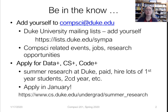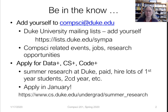First of all, be in the know if you want to know about computer science events that are happening. You need to add yourself to the compsci@duke.edu mailing list. This is a university-wide mailing list. We post messages there about CompSci jobs and events related to computer science. If you'd been on there, you would have heard about applying for a summer opportunity of research with Data Plus, CS Plus, or Code Plus. Apply in January, even though they say the deadline is February, because they're going to start selecting students in January.